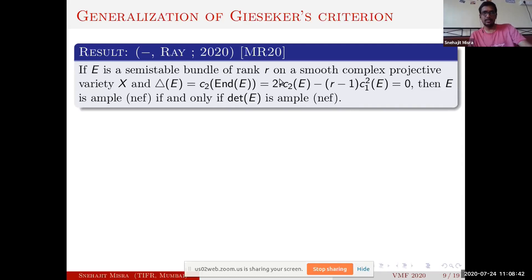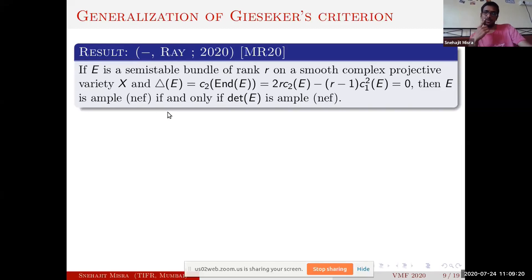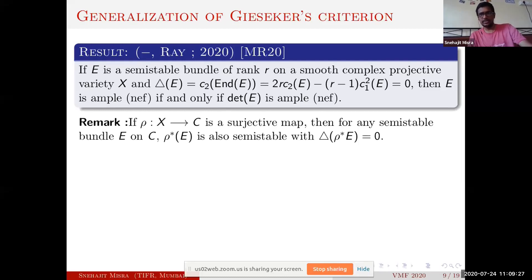Our first result in this direction is: if you start with a semi-stable bundle on a smooth complex projective variety with vanishing discriminant — meaning c_2 of the endomorphism bundle of E is zero — then E is ample or nef if and only if the determinant bundle is ample or nef. Since on a smooth curve c_2 vanishes, this can be thought of as a generalization. I must mention that the condition we impose is only sufficient, not necessary: the tangent bundle of P^2 is stable with non-zero discriminant, yet it is ample and its determinant bundle is also ample.